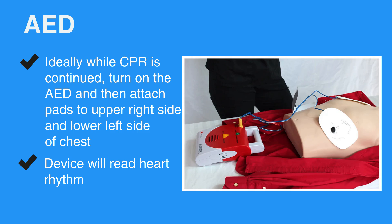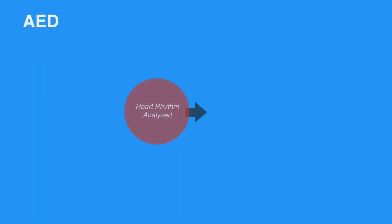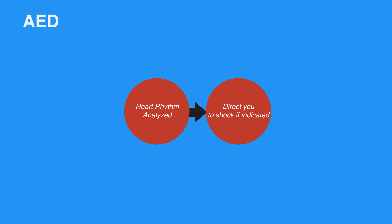If the pads are not attached correctly, the device will indicate so with prompts. Once the rhythm is analyzed, the device will direct you to shock the individual if a shock is indicated. A shock depolarizes all heart muscle cells at once, attempting to organize its electrical activity.